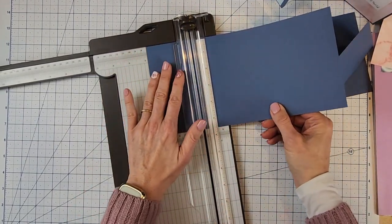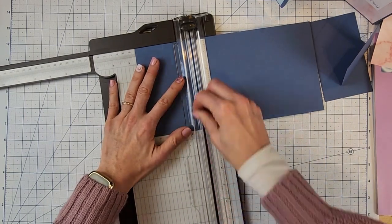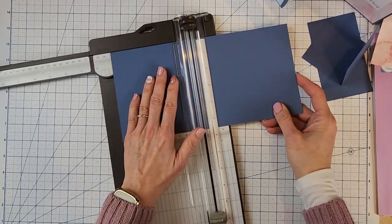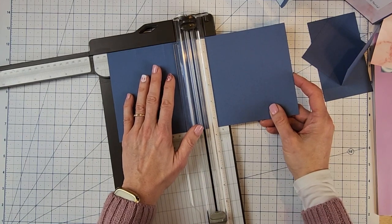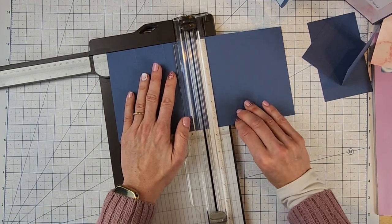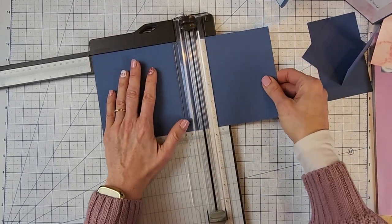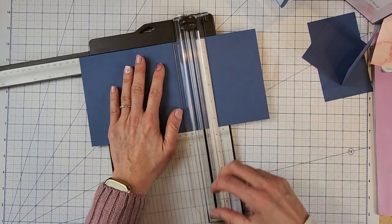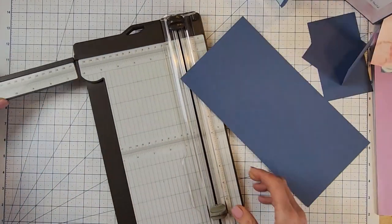And then the long piece, I need my arm open here. We need this scored at 1.75 inches, 3.5 inches, 5.25 inches, and 7 inches. Put the arm back.